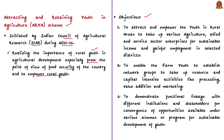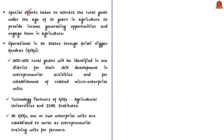The objectives of the ARYA scheme include attracting and empowering youth in rural areas to take up various agriculture, allied, and service sector enterprises for sustainable income, and to generate gainful employment in selected districts. It also aims to enable farm youth to establish network groups for resource and capital-intensive activities like processing, value addition, and marketing. The scheme also demonstrates functional linkage with different institutions and stakeholders for convergence of opportunities available under various other schemes or programs. Special efforts are taken to attract rural youth under the age of 35 years in agriculture to provide income-generating opportunities.